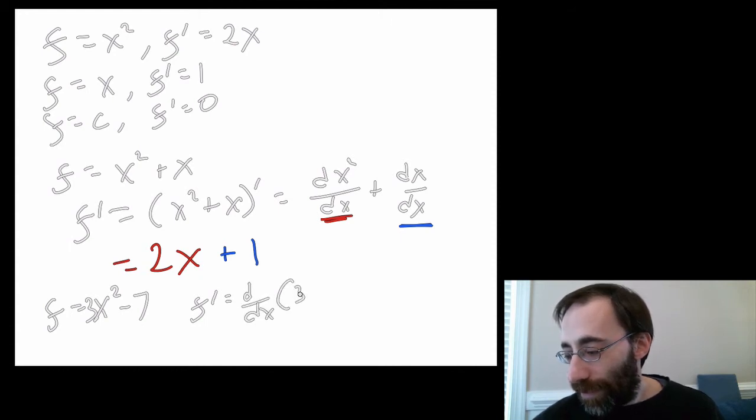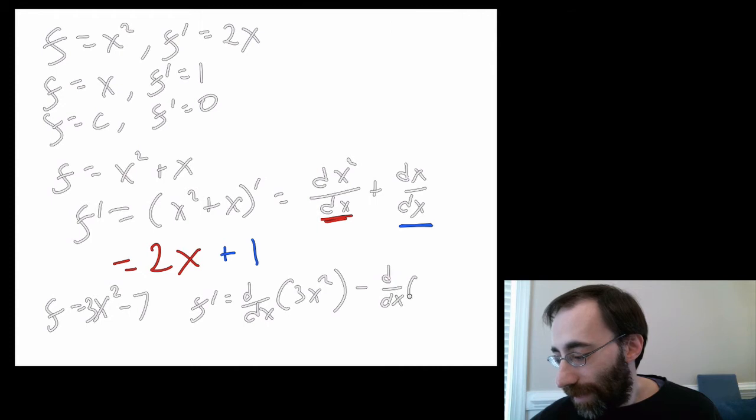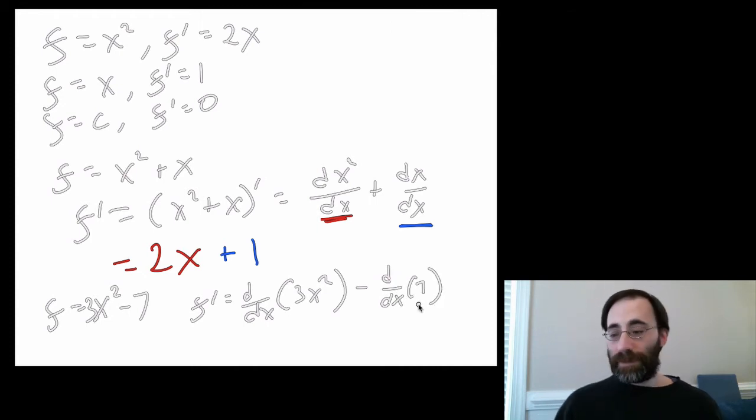then minus the derivative of the second term in this case. This derivative over here is 0 because it's a constant. That leaves just this one.